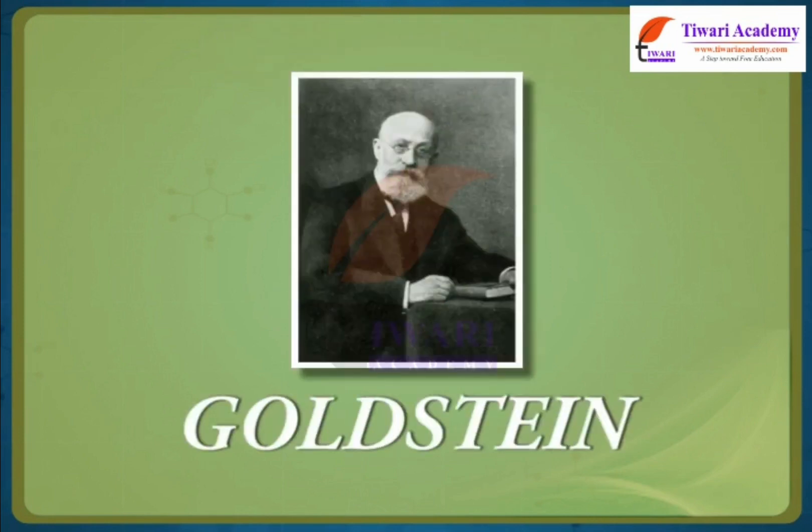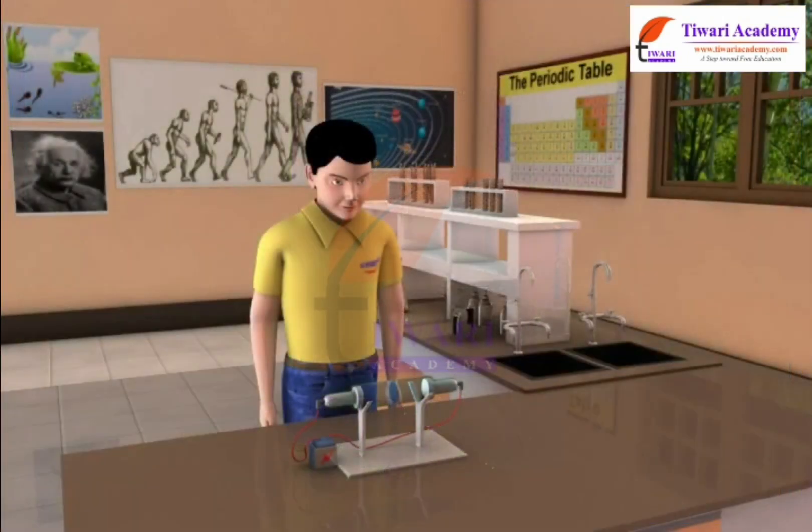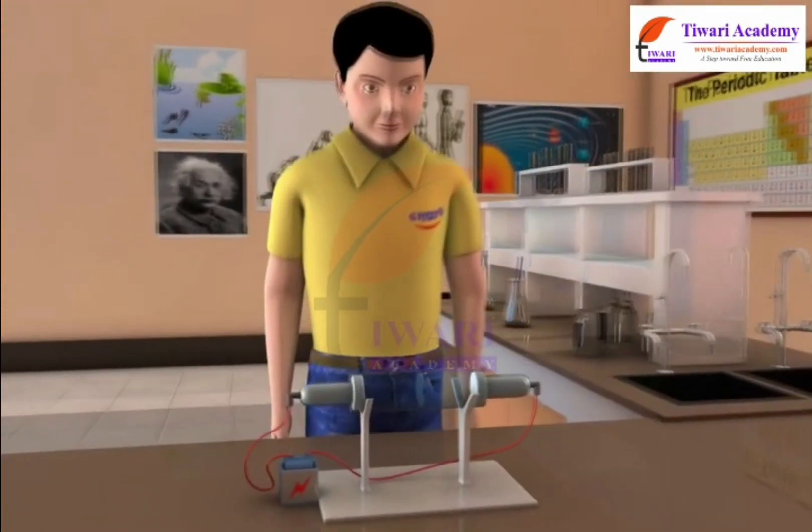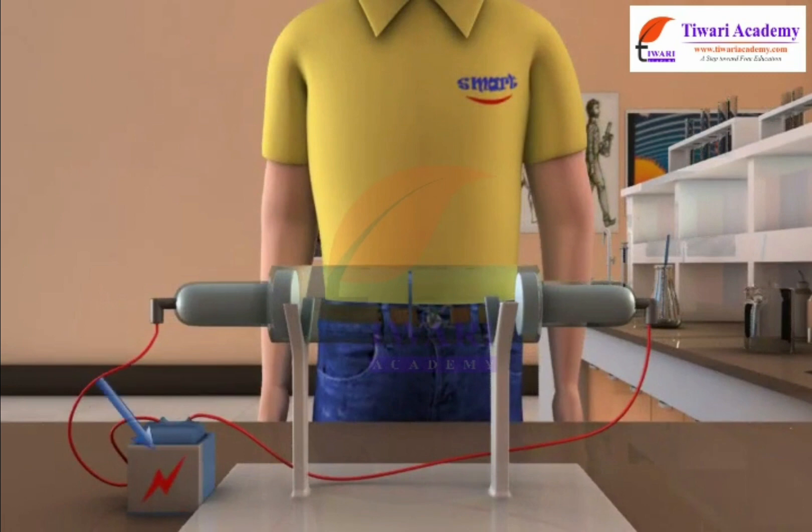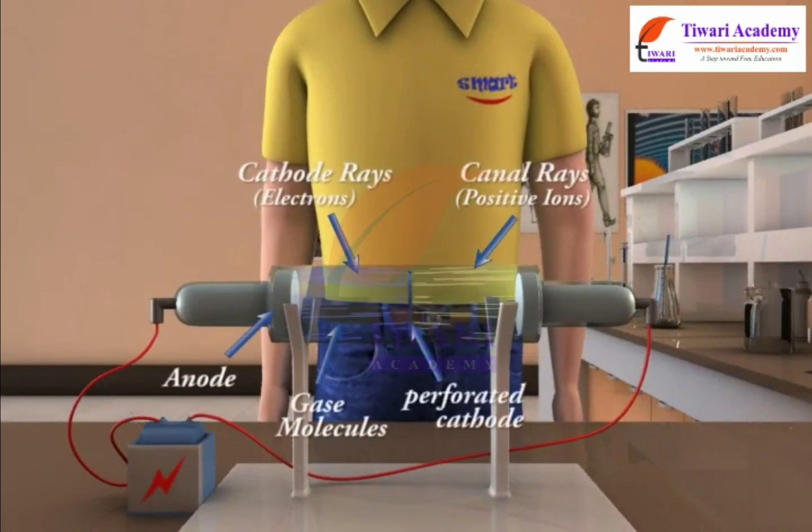Goldstein in 1886 used a perforated cathode in a discharge tube. On passing the electric discharge at low pressure, he observed a new type of rays carrying a positive charge streaming behind the cathode. These rays were named anode rays or canal rays.